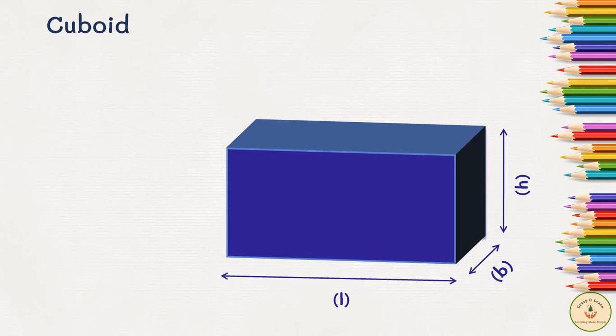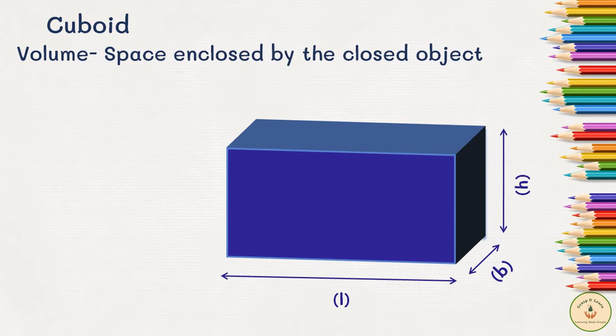The first formula we will consider is the volume of the cuboid. First, what exactly is volume of any object? When we consider any three-dimensional object, its volume is nothing but the space enclosed by this closed object, or the material that this object can actually fill inside it.